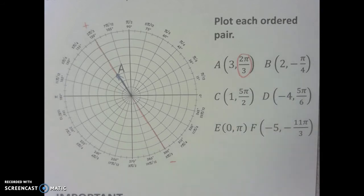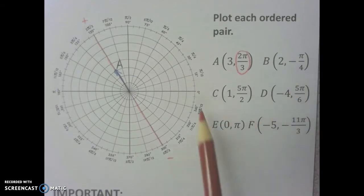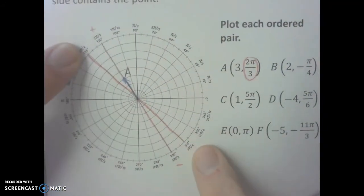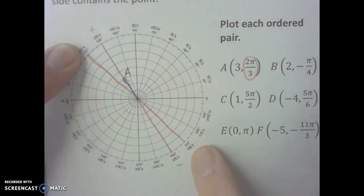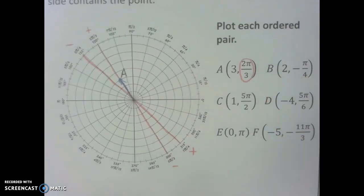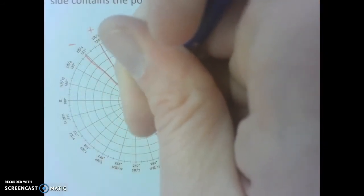Let's try B: the ordered pair (2, -π/4). I need to figure out where negative π/4 is marked. Negative π/4 is the same rotation as π/4 but in the negative direction — right here. Think about the line containing negative π/4; this is the positive direction, and the other direction is negative. Since r is 2, I go two units in the positive direction along that line. That point is B.